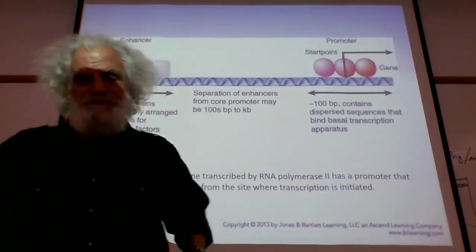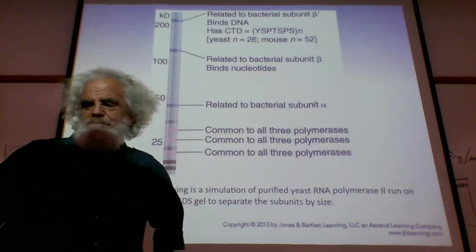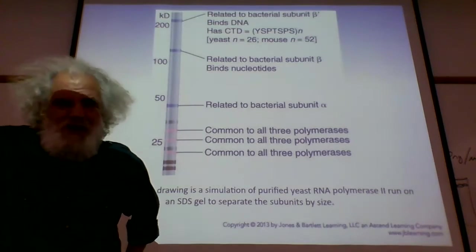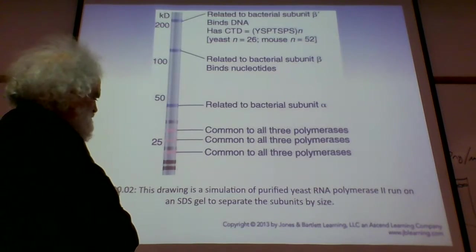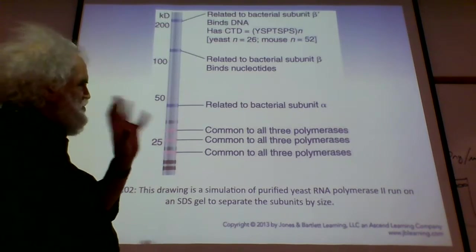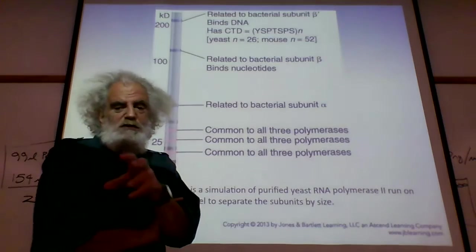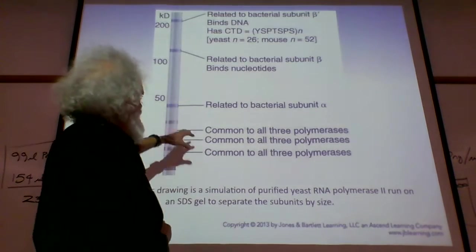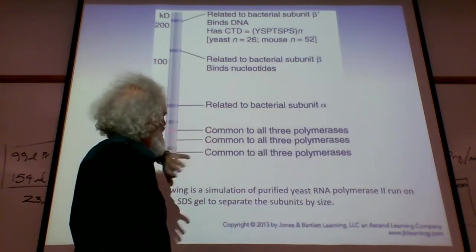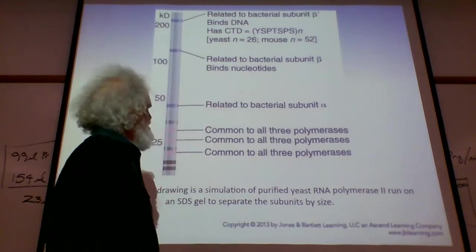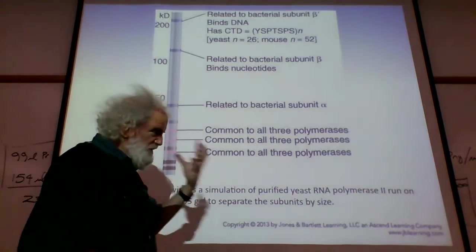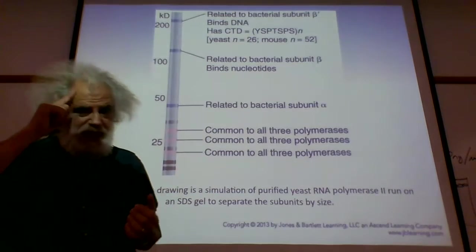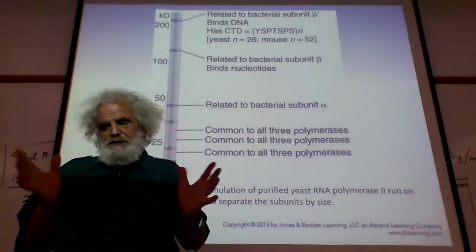When we look at RNA polymerase in yeast, there's actually a number of proteins that are similar to the bacterial protein. We've got a subunit that is related to the alpha subunit and subunits related to the beta subunit, so there are multiple subunits now.